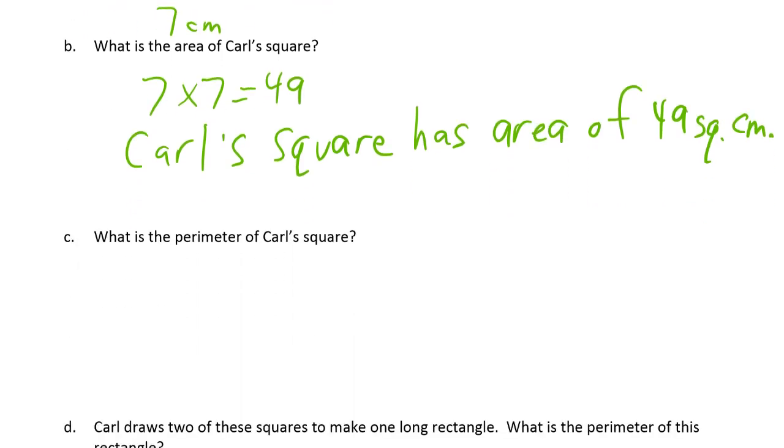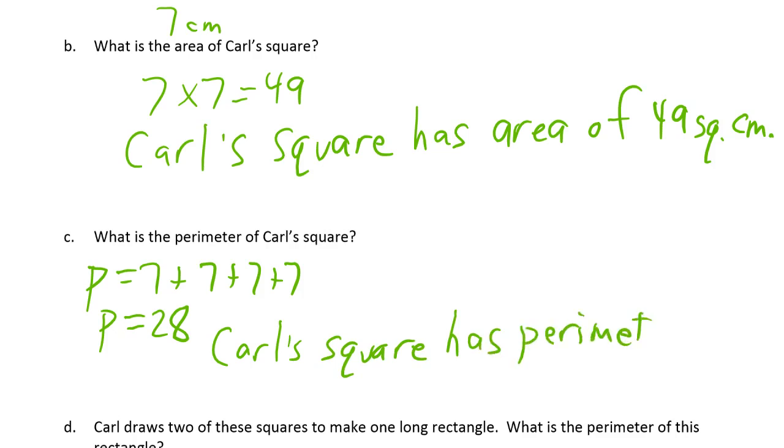What is the perimeter of Carl's square? That's 7 plus 7 plus 7 plus 7. So P equals 4 times 7 is 28, and it's perimeter of 28 centimeters, not square centimeters.